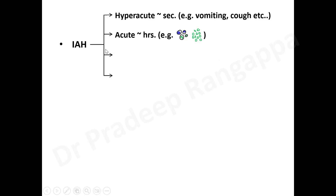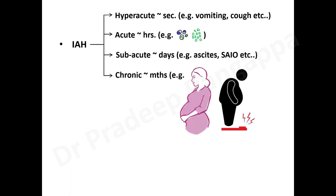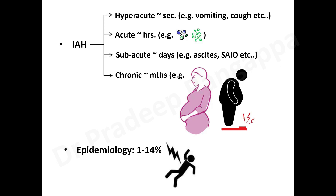Subacute IAH involves evolution of increased intra-abdominal pressure over a few days and can be due to ascites or subacute intestinal obstruction. Chronic IAH is progression over many months, as in pregnancy or obesity. Chronic cases do not necessarily lead to abdominal compartment syndrome because of the body's adaptability to the gradual pressure increase.